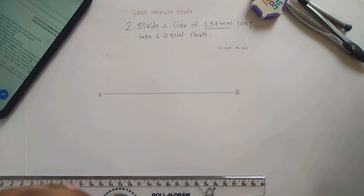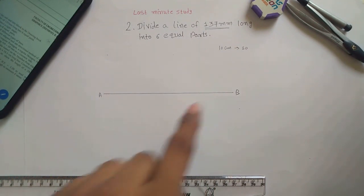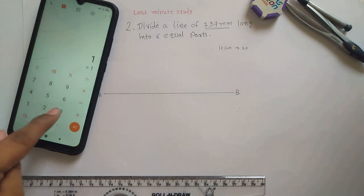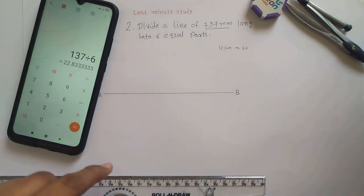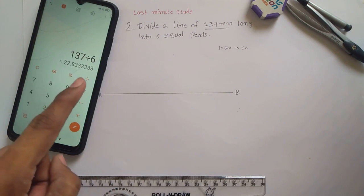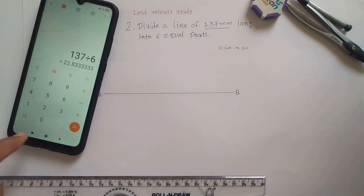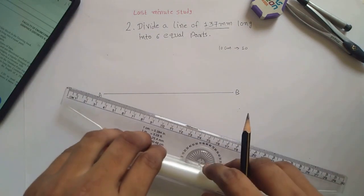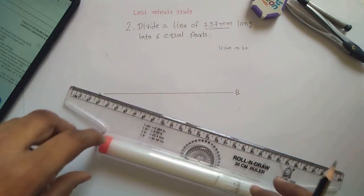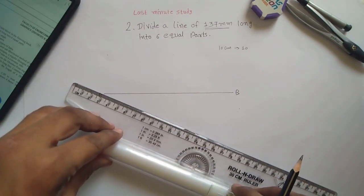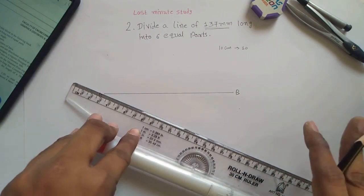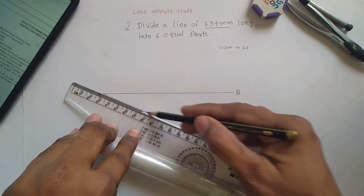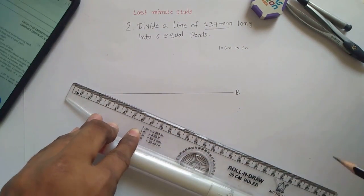Now we have to divide it into 6 equal parts. If we are using a calculator 137 divided by 6 you cannot measure this 22.8333 on the scale. So we have to divide it into 6 equal parts. For that, draw a line at an angle nearer to 30 degrees. But here no need to measure a 30 degree, draw a line at an angle of 30 degrees.